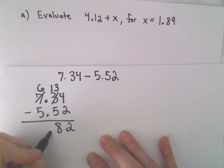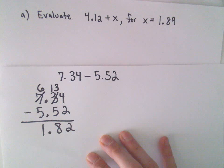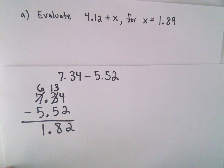We'll be left with 1.82. We can drop down our decimal and then 6 minus 5 will leave us with 1.